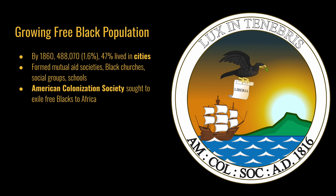With the growth of the free black population, some white leaders and abolitionists formed the American Colonization Society to find a place in Africa to resettle free blacks. Supporters were abolitionists who did not believe slavery was morally right, but also did not believe blacks and whites could live amicably together. Their solution was to send black people back to Africa — either to Sierra Leone, where the British had set up a free black colony, or to Liberia, which declared its independence in 1847, becoming the first African republic to proclaim independence.